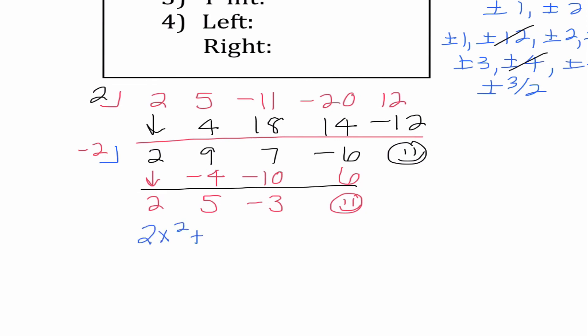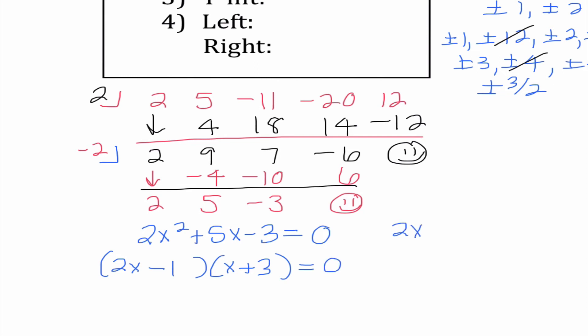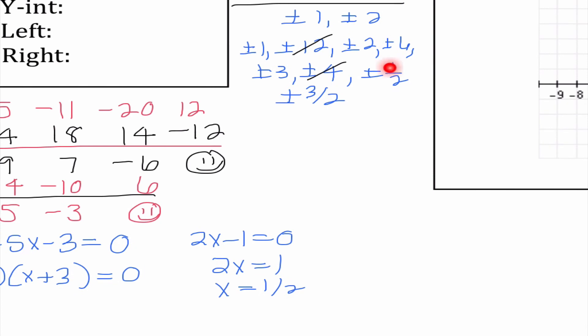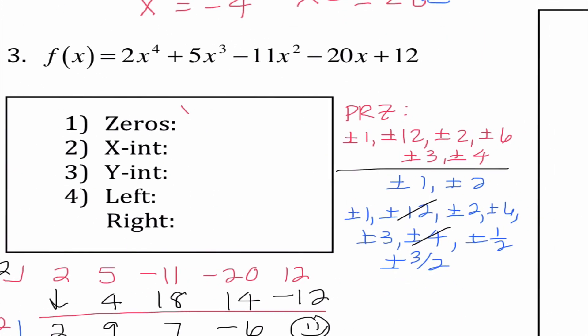I'm going to bring 2 down: 2 times negative 2 is negative 4, so I have 5; negative 10, so negative 3; 6, so I get 0. So far we're seeing 2 and negative 2 work. Now that this is quadratic, I'm setting up this equation equal to 0. I know 2 times negative 3 is negative 6, and I can think of factors of negative 6 that add up to be 5. So I say 2x and x, and I'll try negative 1 and positive 3. I get x equals 1 half and x equals negative 3.